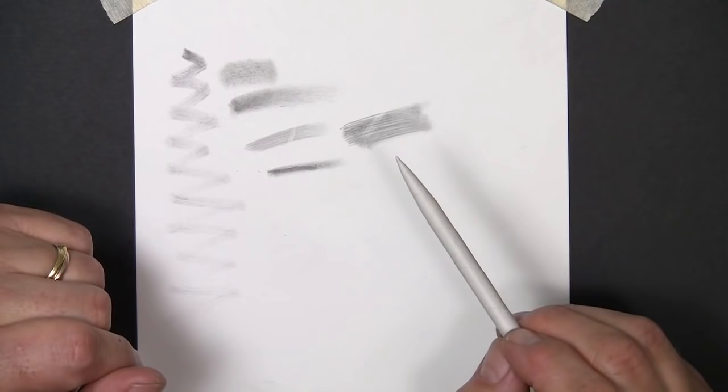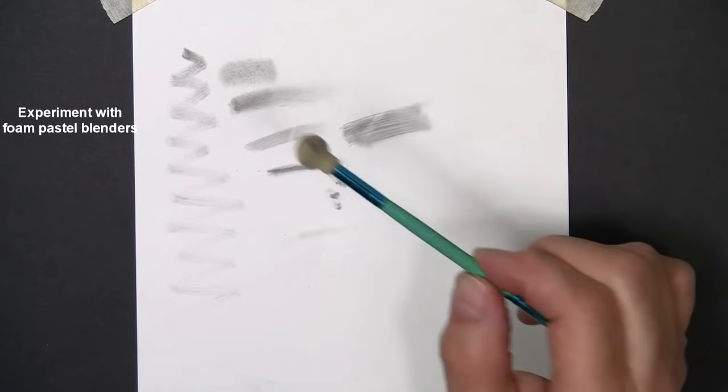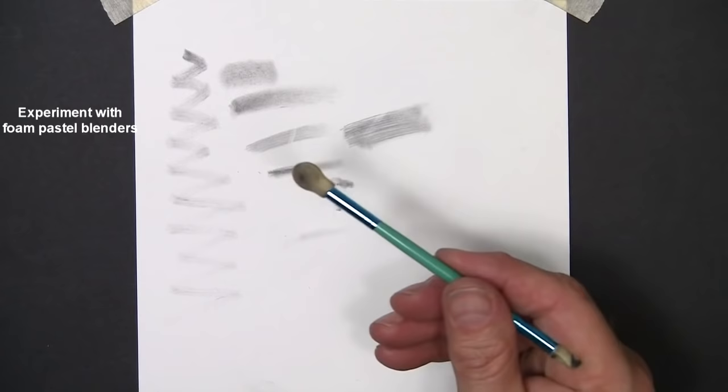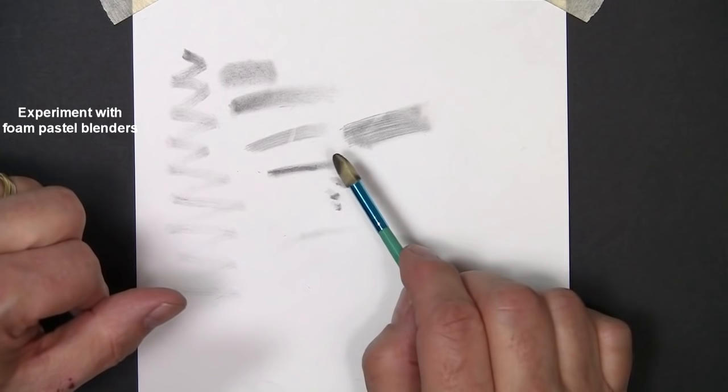Anything that you can use for pastel blending, you can use for charcoal or graphite blending. So there's a lot of these little tools that have little foam tips that you can buy in art stores that make excellent blenders. And one thing about them is they're much softer than a stump or a tortillion and you won't damage the paper as much.